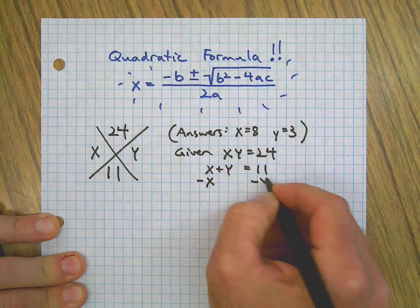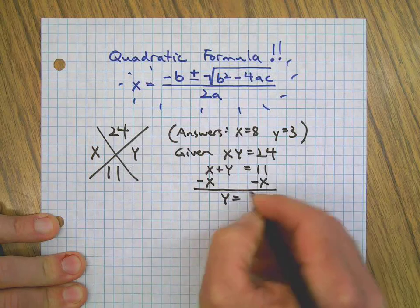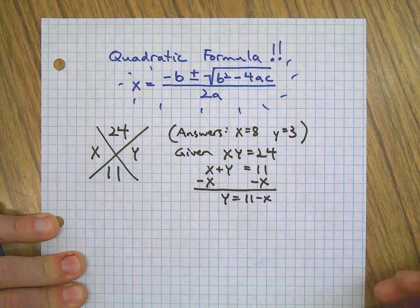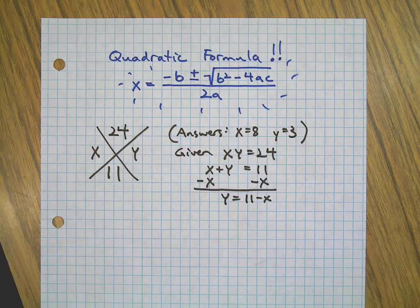Let's say if we isolate y here by subtracting x from both sides of this equation, we can set y equal to 11 minus x. Now we can substitute in the multiplication.